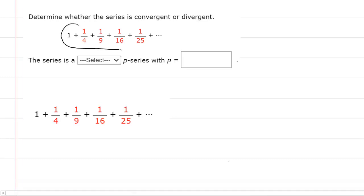We are asked to determine whether this series is convergent or divergent. We can obtain a clue from the answer boxes down here - it tells us that there's something going on with a p-series. So our goal is to rewrite the series in the form of a p-series.